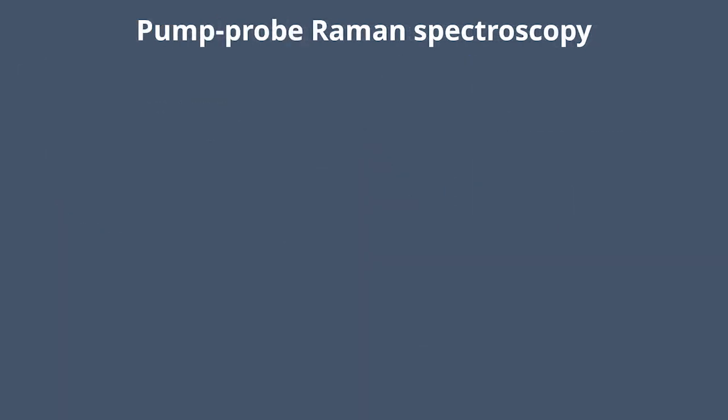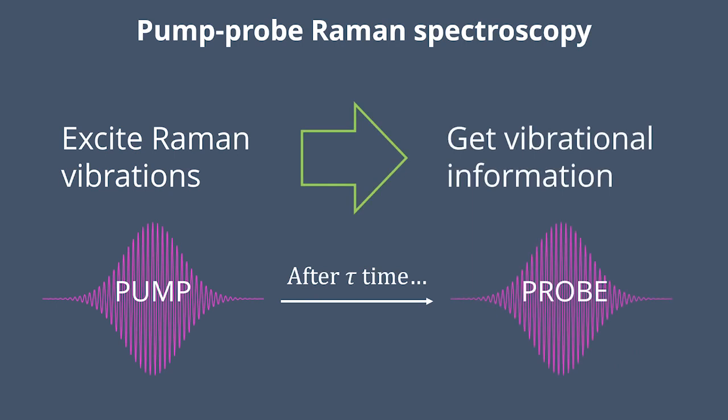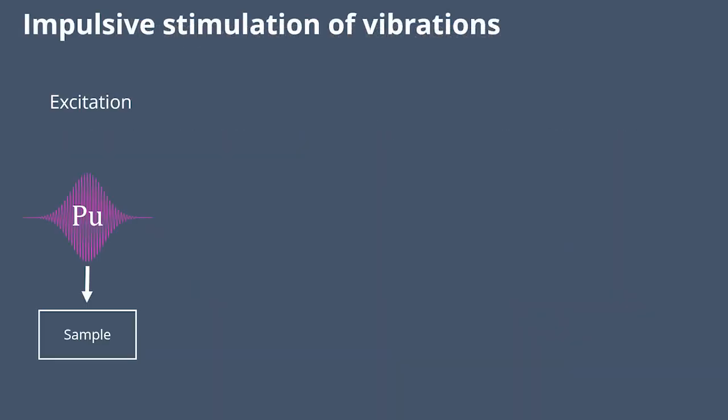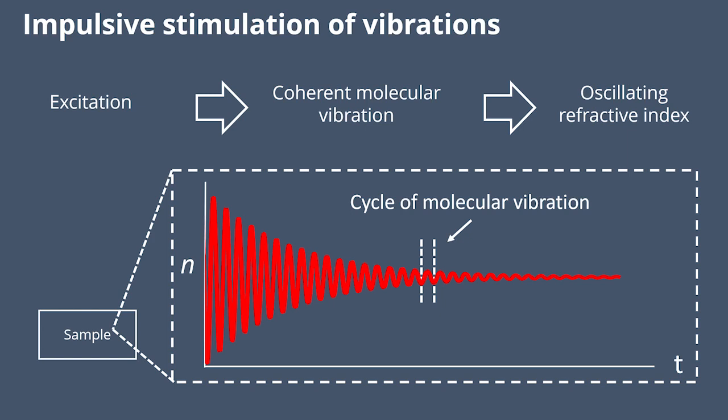This is a pump-probe technique. We use ultra-short laser pulses to excite Raman vibrations, and then after some delay, we get that information with probe pulses. What's happening is these pump pulses stimulate coherent molecular vibrations. When you have that coherent nuclear motion, you also have the electron cloud oscillating, and that in turn causes an oscillatory refractive index.